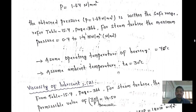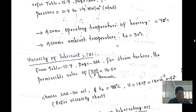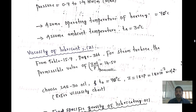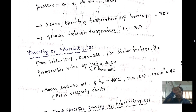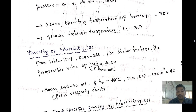The operating temperature of the bearing is taken as 70°C and the ambient temperature is 30°C. To find the viscosity of the lubricant, refer to table 15.7, page 366. The permissible ZN/P value is 14.50. Selecting SAE 30 oil at an operating temperature of 70°C, from the viscosity chart, the dynamic viscosity Z = 18 cp = 18 × 10⁻³ N·s/m².